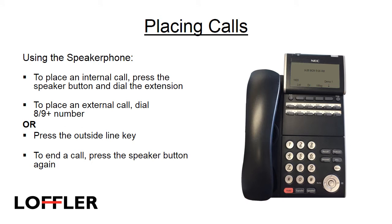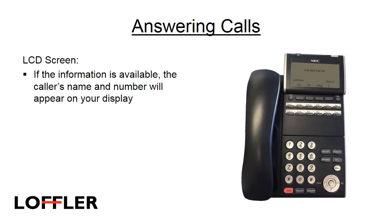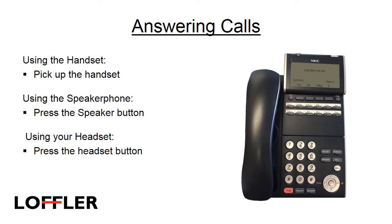To place a call using your speakerphone, press the speaker button and dial the extension. To place an external call, dial the trunk access code 8 or 9, and then the number, or press a program button or an outside line key. To end a call, press the speaker button. While a call is ringing your extension, you'll hear your selected ringtone and the message indicator light will flash. If caller ID information is provided, the caller's name and number will appear on your LCD display. To answer calls using your handset, pick up the handset. To answer calls using the speakerphone, press the speaker button. If you are using a headset, press the programmed headset button.